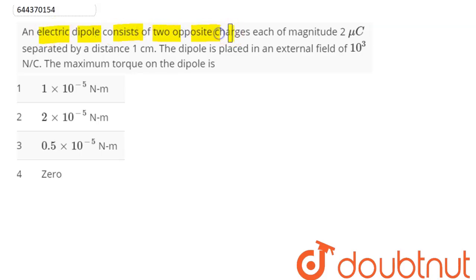of two opposite charges, each of magnitude 2 micro coulombs, separated by a distance of 1 centimeter. The dipole is placed in an external field of 10^3 newton per coulomb. Maximum torque on the dipole is?